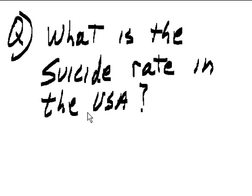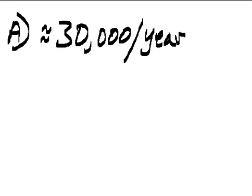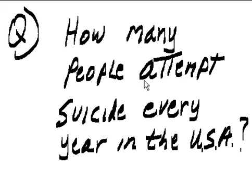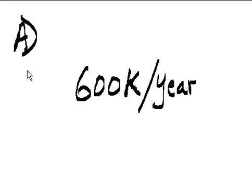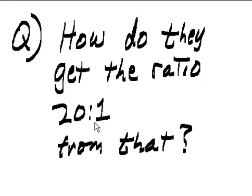What is the suicide rate in the USA? Answer: approximately 30,000 per year. Question: How many people attempt suicide every year in the USA? Answer: 600,000 per year approximately. Question: How do they get the ratio 20 to 1 from that?